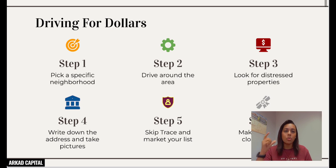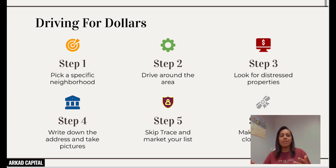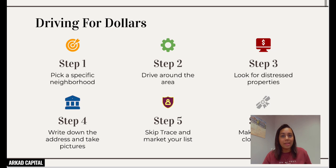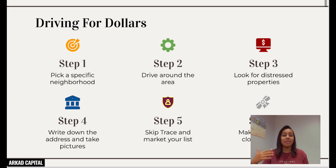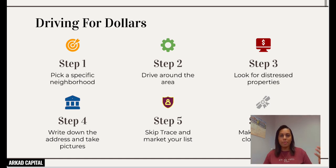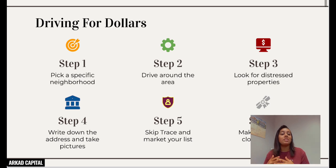Drive around the area. If you can't physically drive, some people use Google Maps Street View — but the issue is it's not updated every month, so you might be looking at a property that was run down a year ago but has since been fixed up. Just check the date. When driving around, look for boarded-up windows and doors, overgrown grass, junk in the backyard — signs of a distressed property, signs that someone might not be living there or doesn't care about the house anymore.